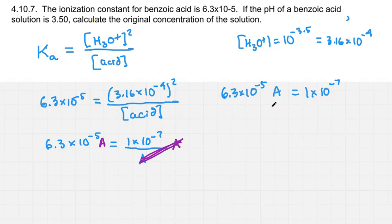So our new line is 6.3 times 10 to the minus 5 times A equals 1 times 10 to the minus 7. Now if we want A alone, it's not alone now because it's multiplied by 6.3 times 10 to the minus 5. What's the opposite of multiplying by that? We divide by 6.3 times 10 to the minus 5. Do that on each side. These on the left cancel, leaving A alone. And on the right, we get a thing the calculator can do for us.